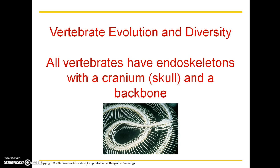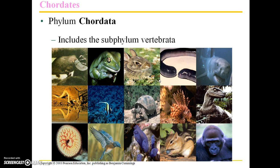We're going to switch gears and go into vertebrate evolution and diversity. All vertebrates have endoskeletons, meaning their skeletons are on the inside within soft tissue. They all have a skull as well as a backbone. The phylum Chordata includes the subphylum Vertebrata and includes many common species such as amphibians, reptiles, and mammals.